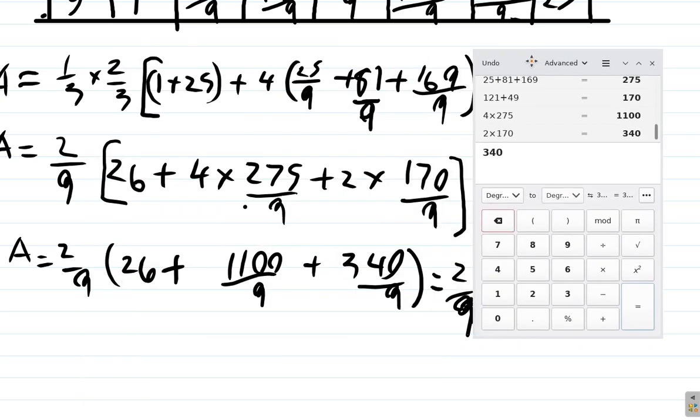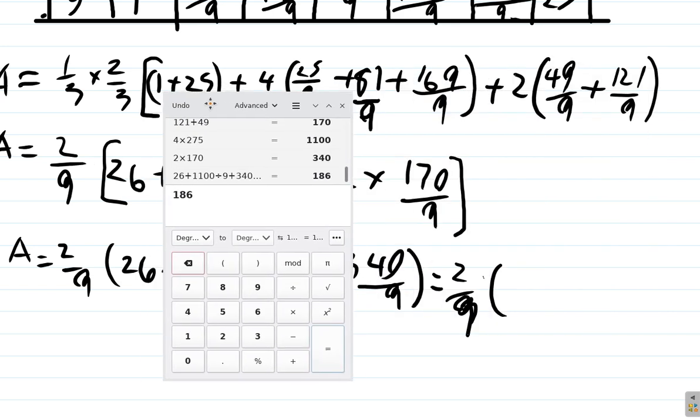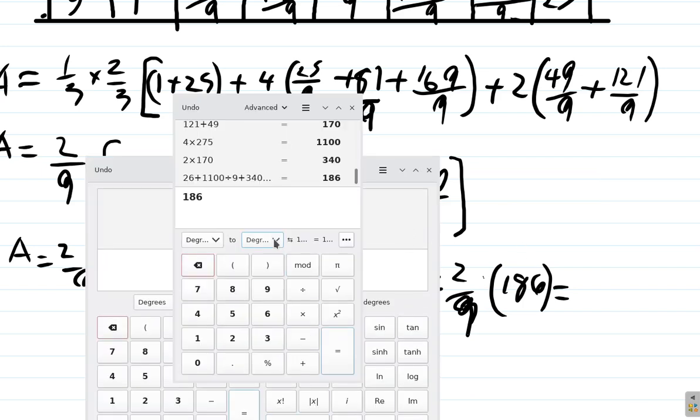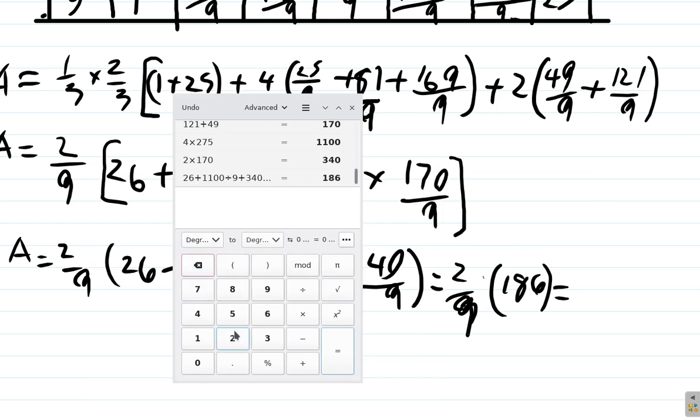So we have 2 over 9 times 26 plus 1100 over 9 plus 340 over 9, which equals 186. So 2 over 9 times 186 equals 41 and 1 third.